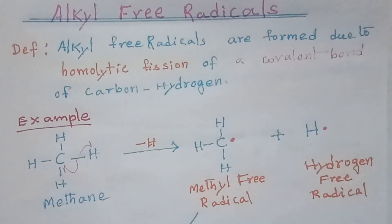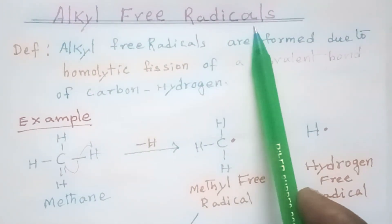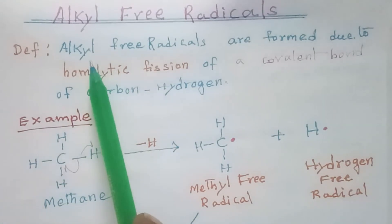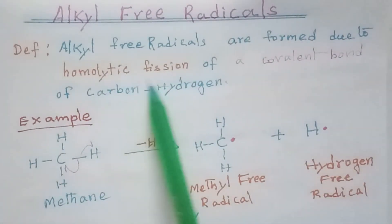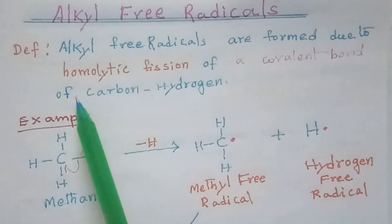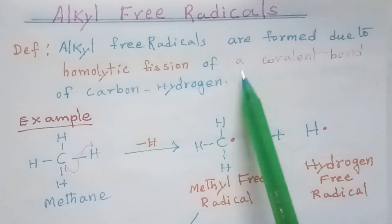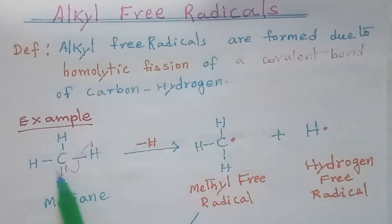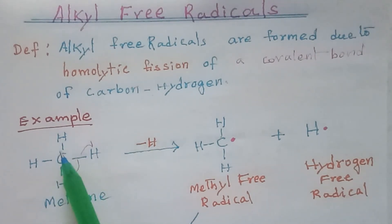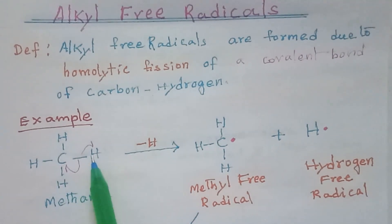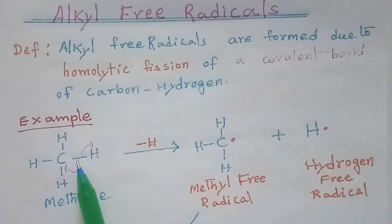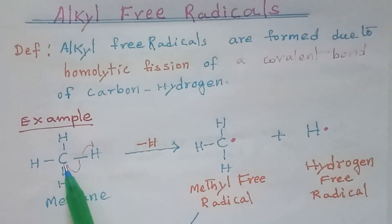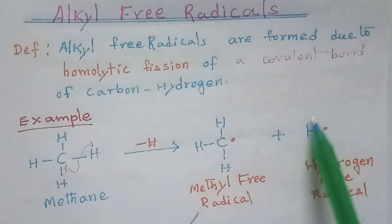In this lecture we shall learn about alkyl free radicals. Alkyl free radicals are formed due to the homolytic fission of a covalent bond between carbon and hydrogen in an alkane. For example, CH4 is methane — there are four covalent bonds between the central carbon atom and hydrogen atoms. If one of the bonds between carbon and hydrogen breaks homolytically, one electron of the covalent bond goes to hydrogen and another electron goes to carbon.